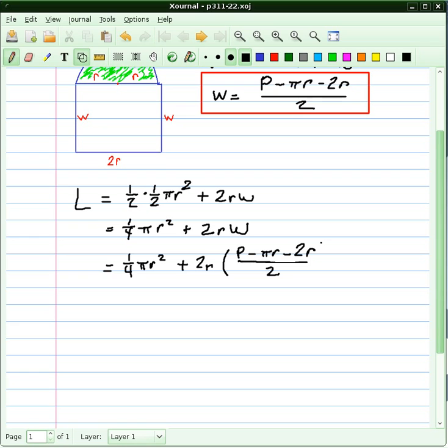Lucky for us, that 2 is going to cancel with this 2, and so this expression does simplify a little bit. We end up with one-fourth πr² plus, I'm going to distribute the r and cancel the twos, Pr minus πr² minus 2r².